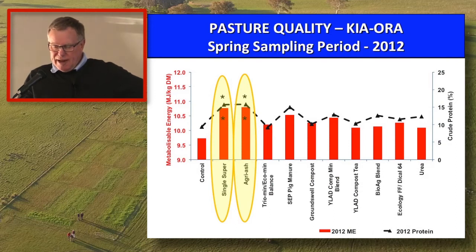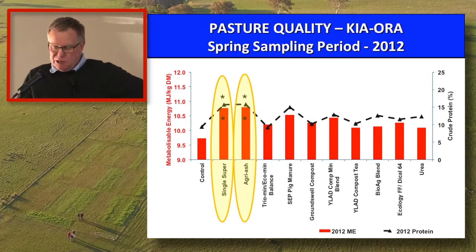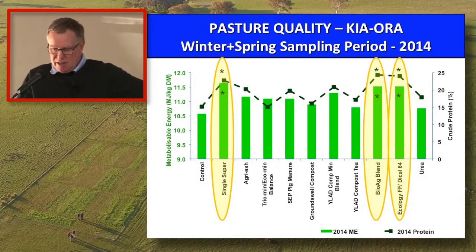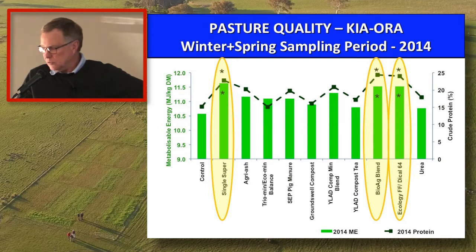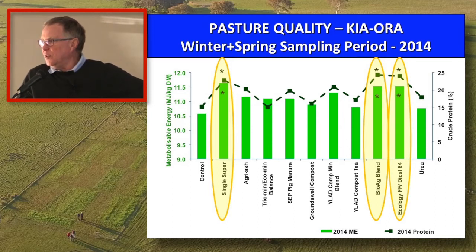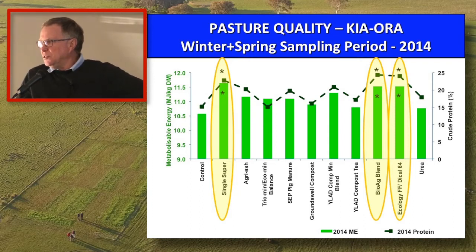The Kiora data — energy in red, protein in black. We've only got two products that were significant for both in 2012: the Super and the Agriash. When we come to 2014, there were three products significant for both: the Super, the BioAg Blend, and the Dical 64. So that's the quality data. We've got that quality data from every year since 2011, but for a range of reasons we chose 2012 and 2014 to show.